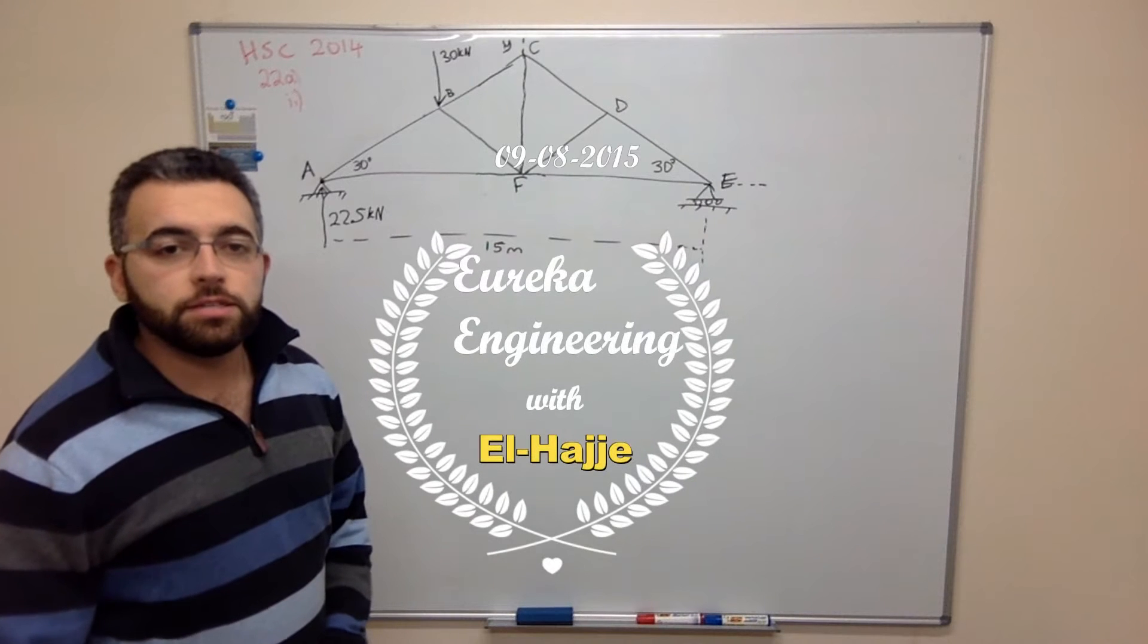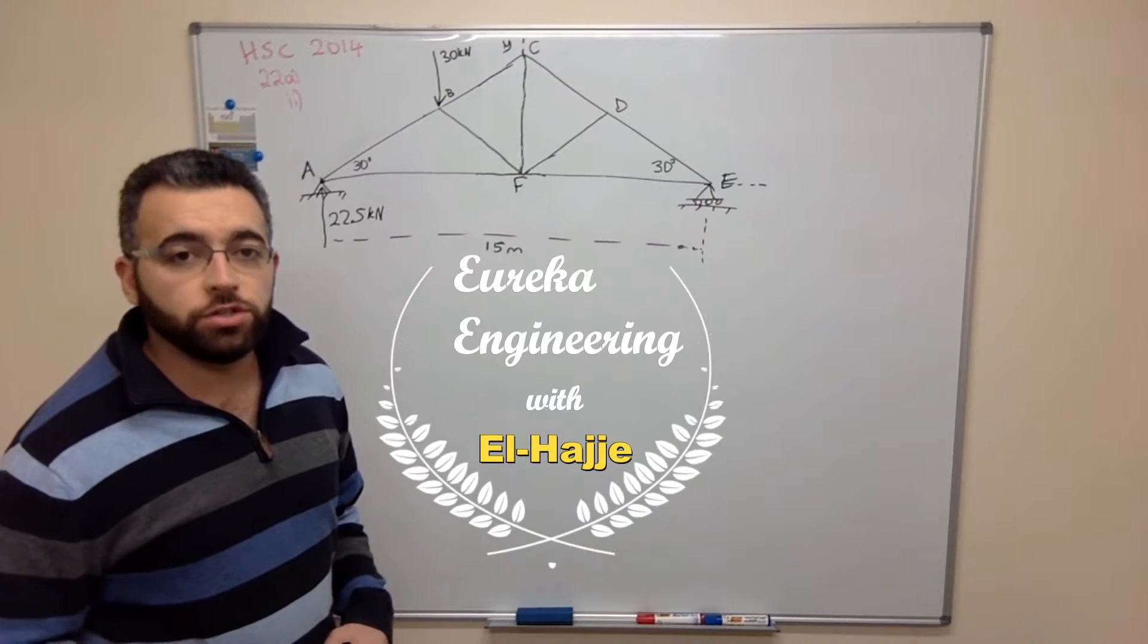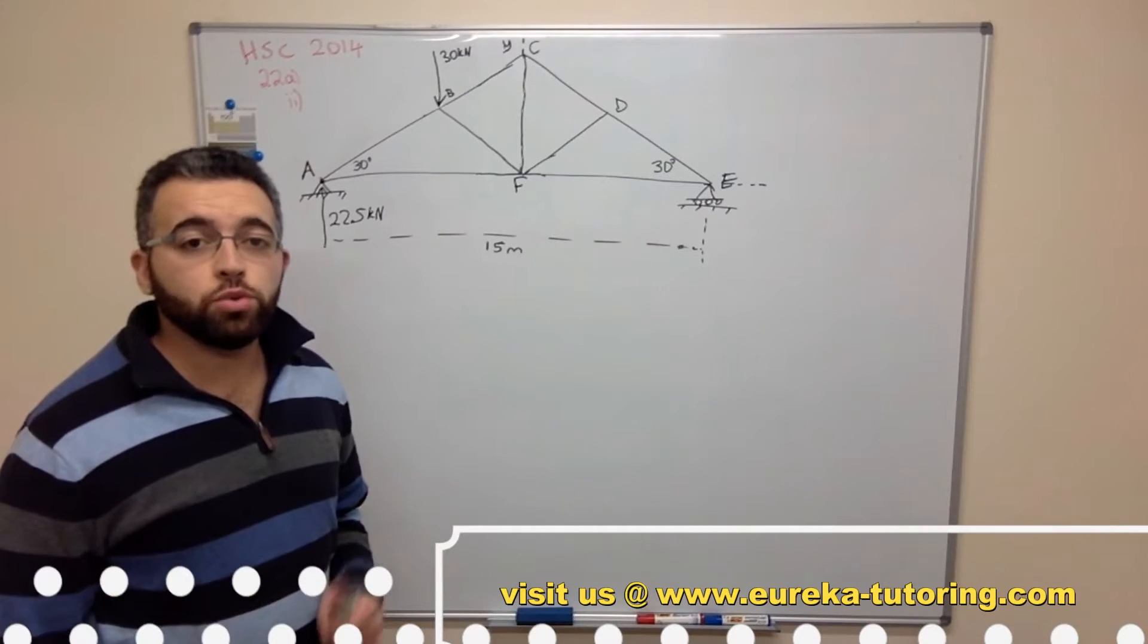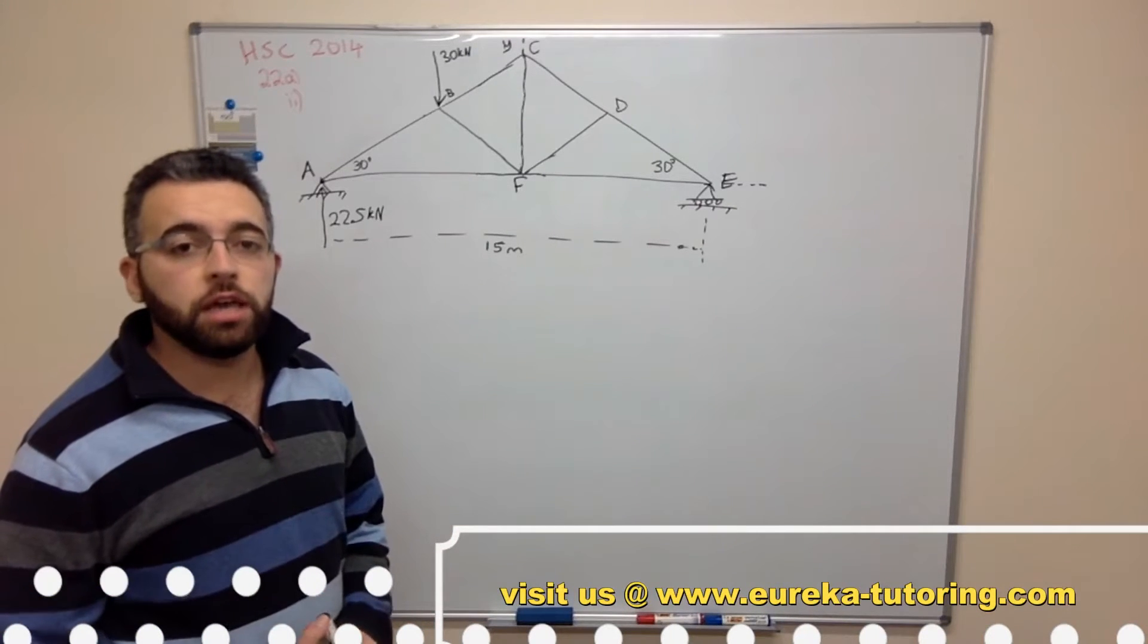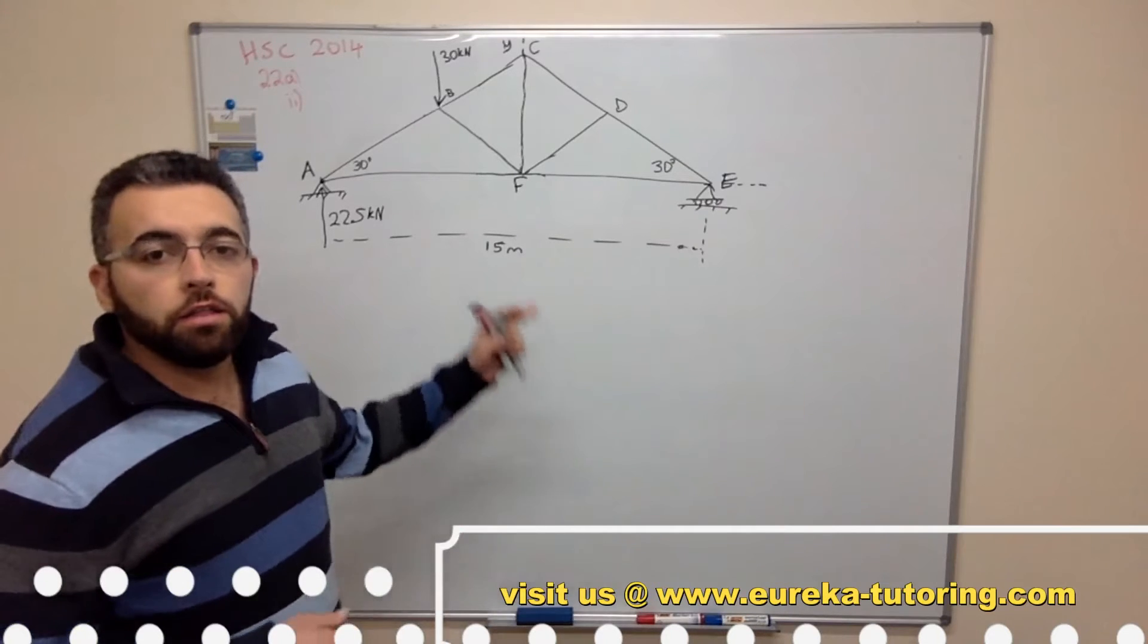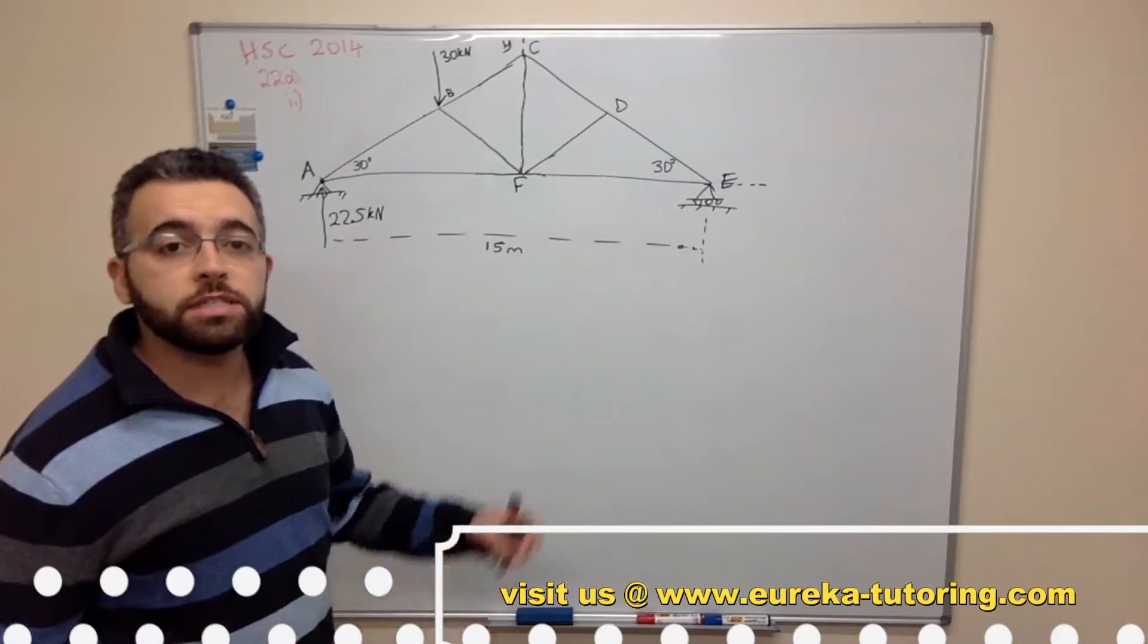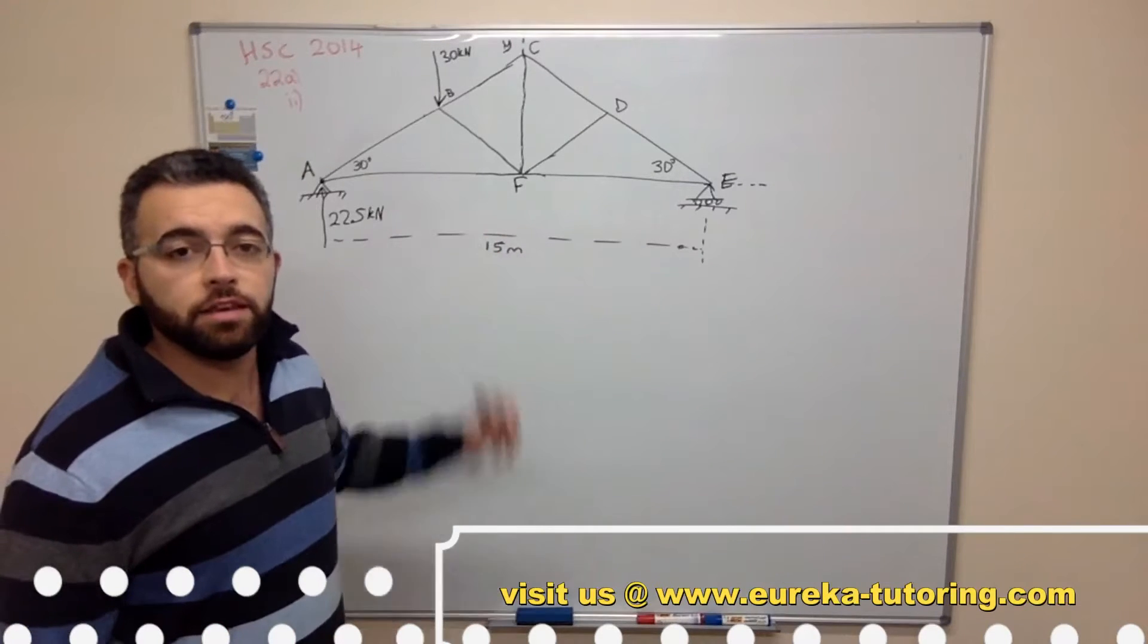Welcome to the second installment of Eureka Engineering HC solutions. Today we'll pick up from where we left off and look at part 2 of question 22A from the 2014 HC paper. Now this question asks us to determine the magnitude and nature of forces in member BC and in DF.